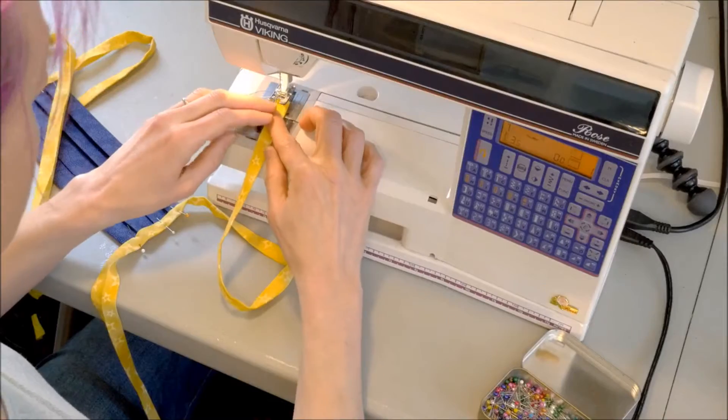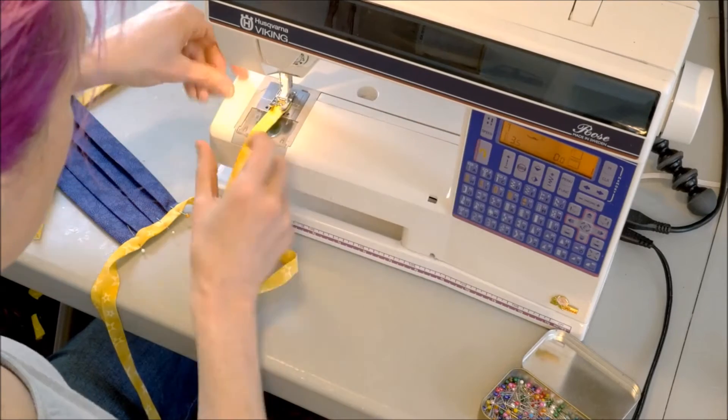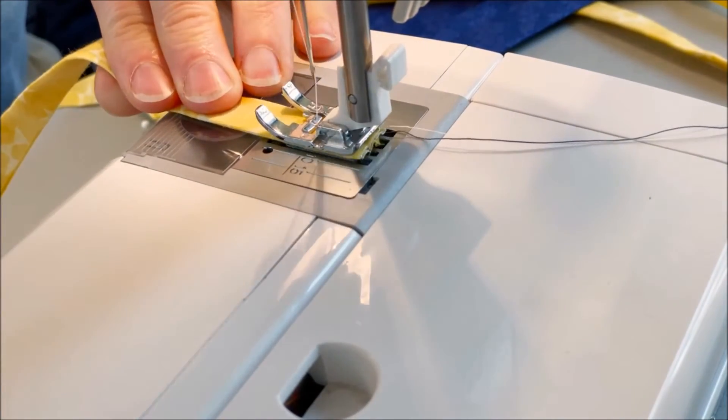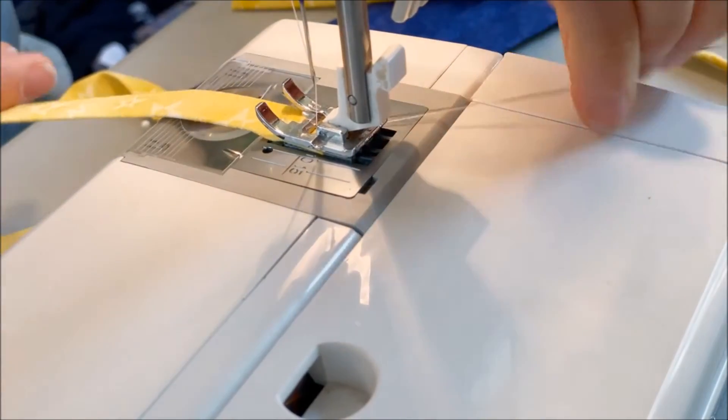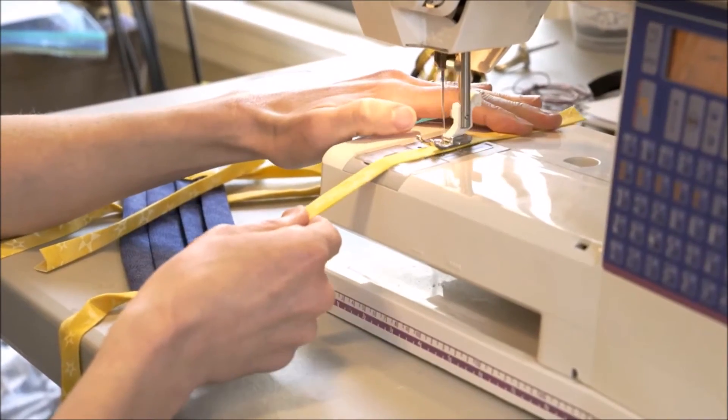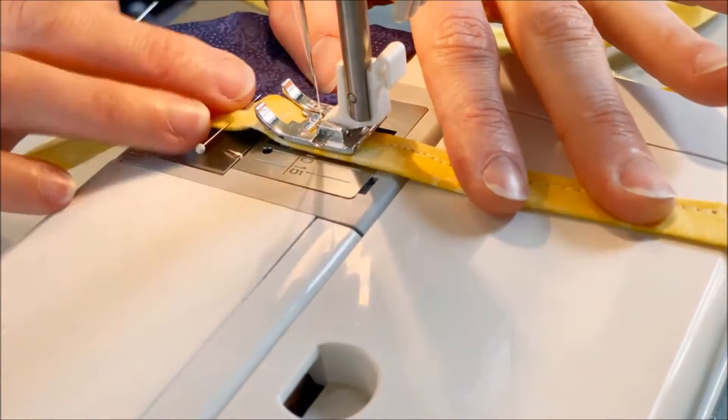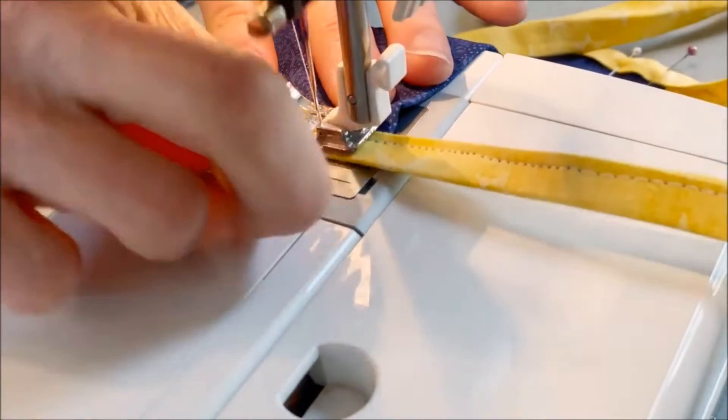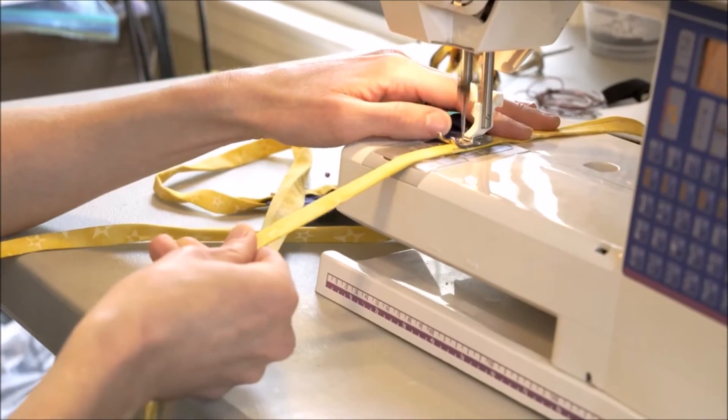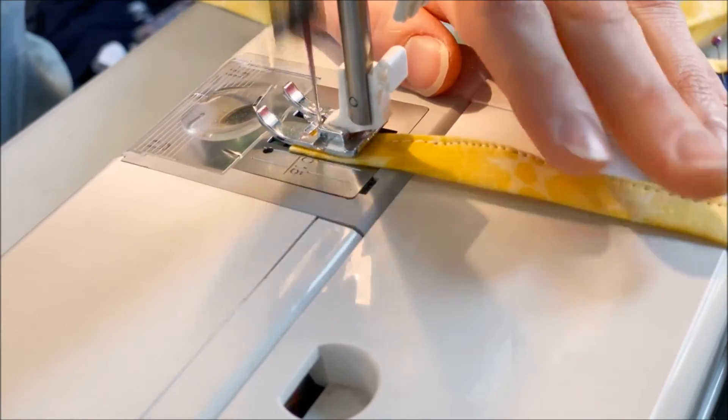Now we're going to stitch everything in place. At this point everything is ironed but not stitched. I'm starting at one end of the strip and stitching the entire length going over the pleats. Then do the same for the other side.